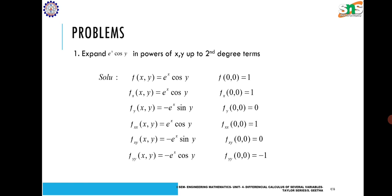Now we are going to see one problem. We are going to expand e^x·cos(y) in powers of x and y up to second degree terms. So 'in powers of x and y' means the point (a, b) will be taken as (0, 0). The given function is f(x, y) = e^x·cos(y).